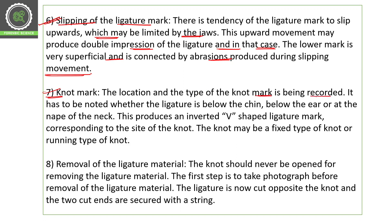The seventh factor is the knot mark. The location and type of knot mark must be recorded. It is important to note the place of the knot — whether the ligature is below the chin, below the ear, or at the back of the neck. This produces an inverted V-shape ligature mark corresponding to the side of the knot. The knot may be a fixed type or a running type (running noose knot), and a fixed knot creates a more prominent impression.